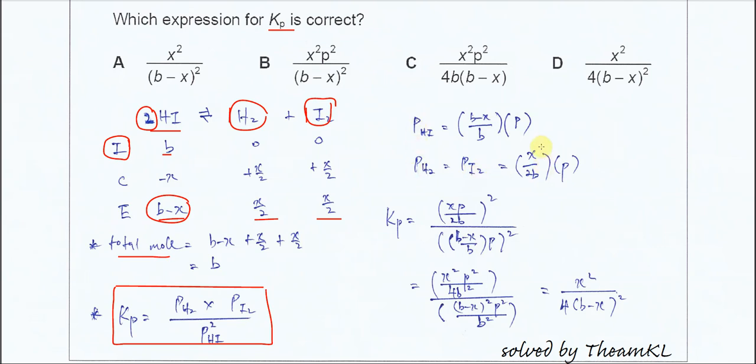Now we need to substitute into the Kp expression. So we will get this, and rearrange and solve it. At the end we will get X squared over 4 times B minus X bracket squared. So the answer is D. That's all for this question.